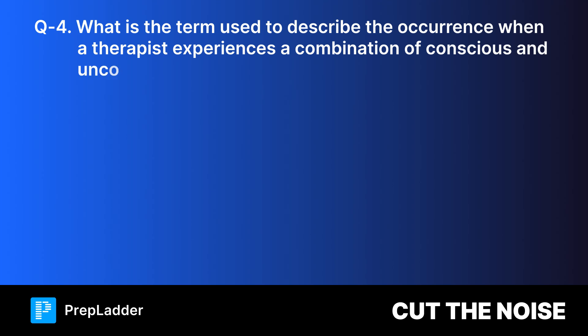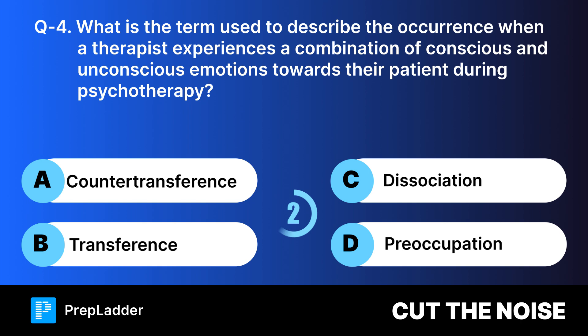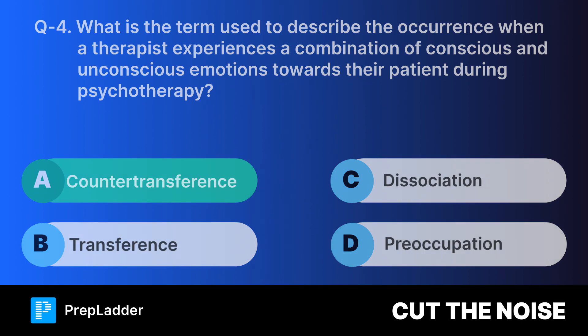Question number four. What is the term used to describe the occurrence when a therapist experiences a combination of conscious and unconscious emotions towards their patient during psychotherapy? Your options are, and the correct answer is countertransference. Here is the explanation.